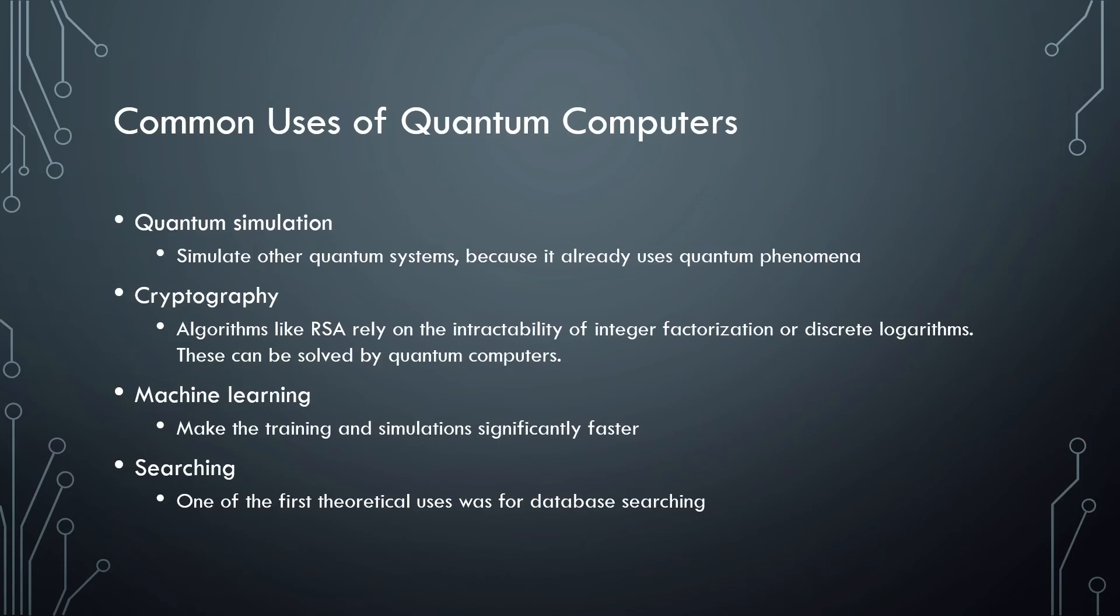The final use I will discuss is searching. One of the first theoretical uses for quantum computers was for searching databases. The nature of superposition allows for the time complexity for algorithms to be decreased. There are other applications, but these are the big ones that I found.